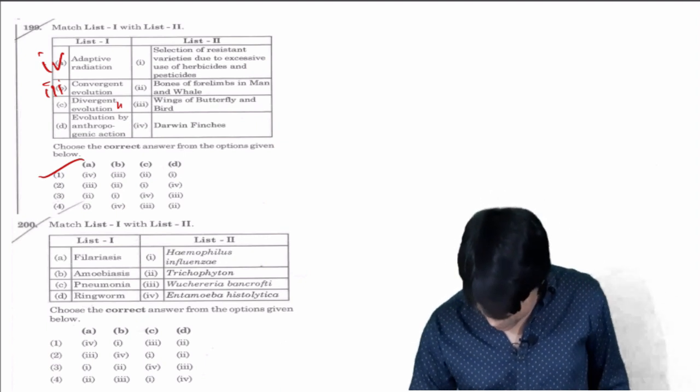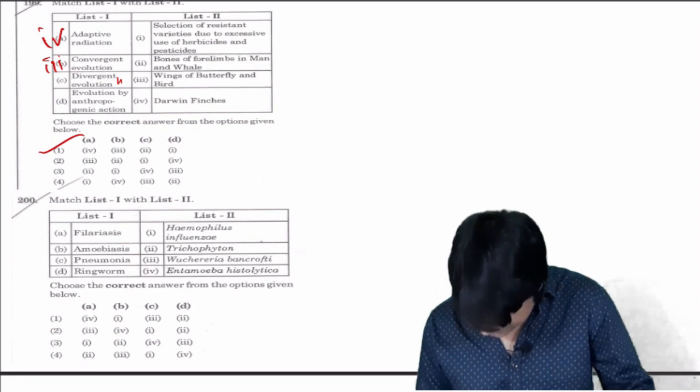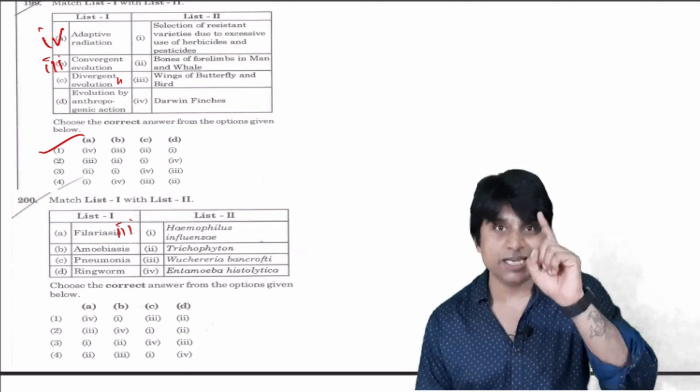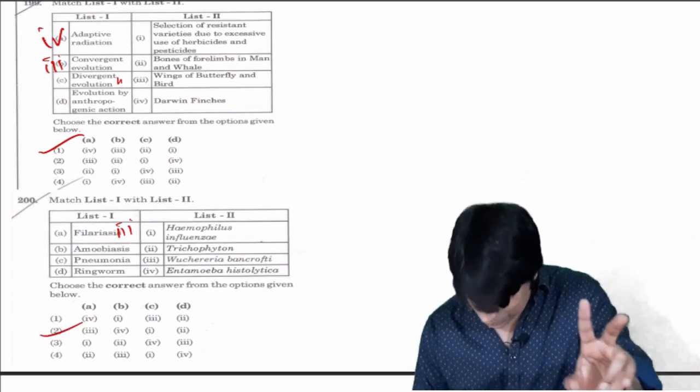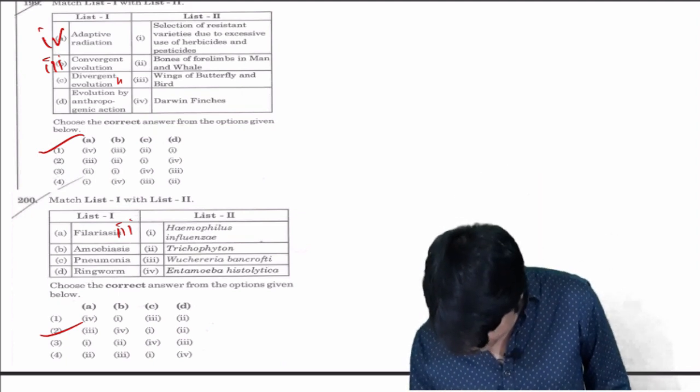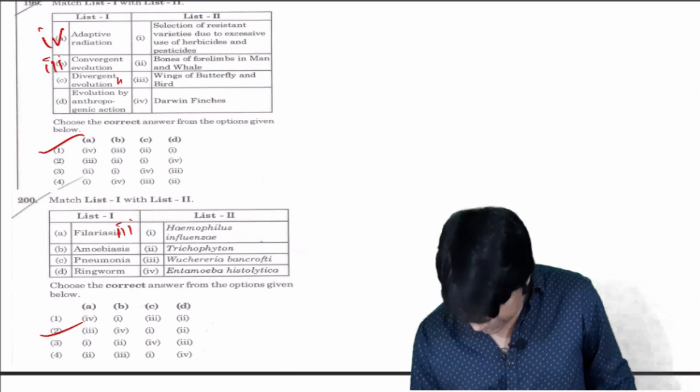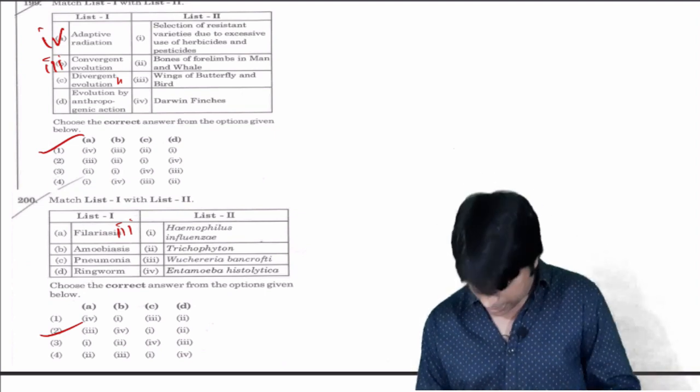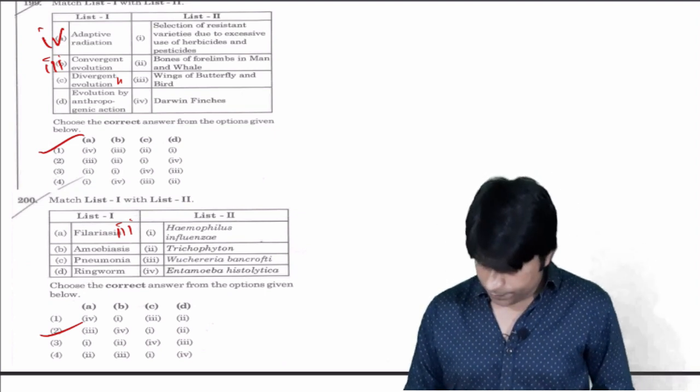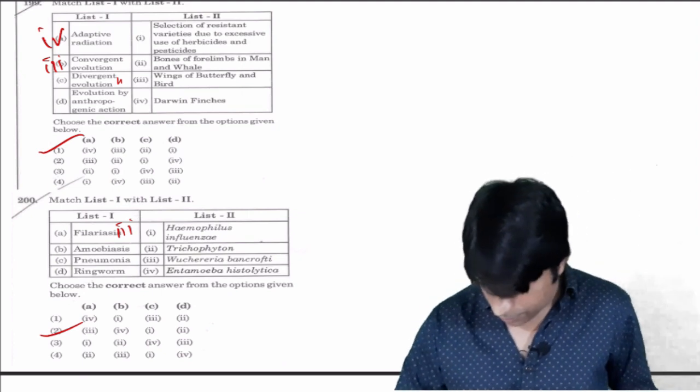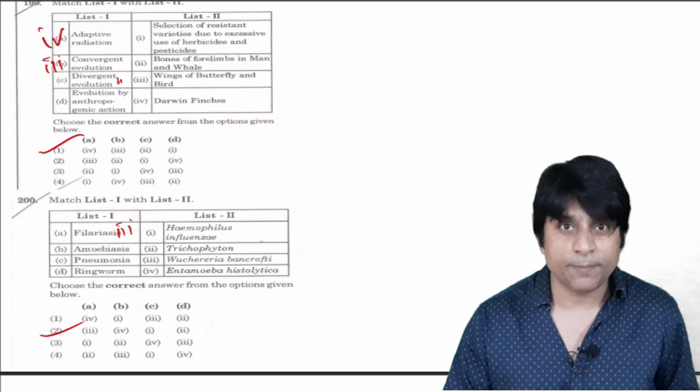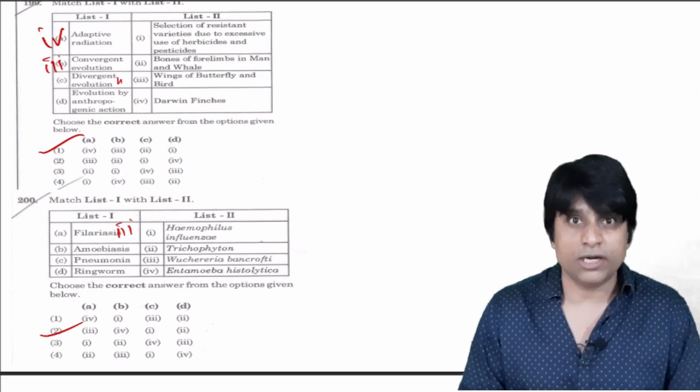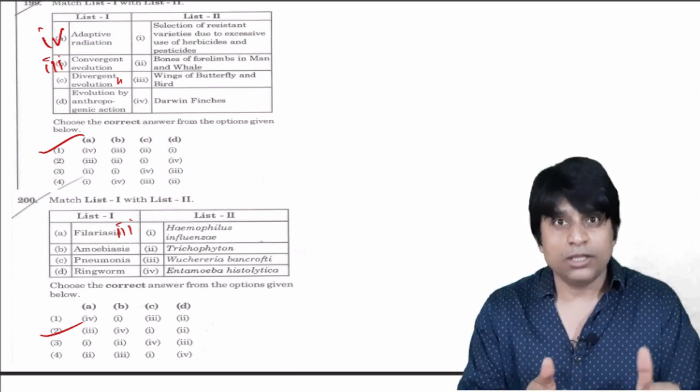Question number 200, filariasis is caused by Wuchereria bancrofti, it is three. Question starting with three is only one, that is second option. Your answer is two. Amoebiasis is Entamoeba histolytica, four. Pneumonia is Haemophilus influenzae, one. Ringworm is Trichophyton, two. So answer is two. So guys, this is about your paper. According to me the paper is moderate but students can solve almost all 45 questions, they can easily solve it. So wish you all the best and good luck.